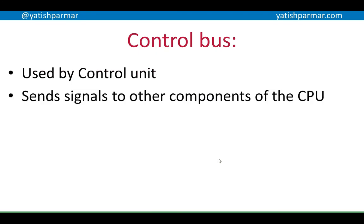Finally, you've got the control bus. The control bus is used by the control unit and it sends signals to all the other components of the CPU to tell them what to do and when to do it. It sends signals controlling the different operations, which can include memory read and write operations as well as input and output operations.